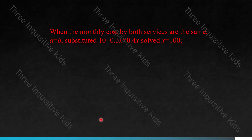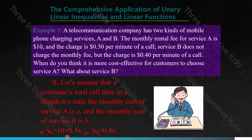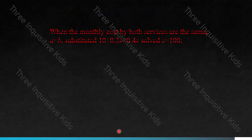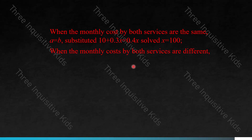When the monthly cost of both services is the same, A equals B. Substituting — since A is 10 plus 0.3x and B is 0.4x — we get the linear equation: 10 plus 0.3x equals 0.4x. Notice how we used linear functions and then, after substituting, transformed them into a linear equation. Solving this equation gives X equals 100: that is when the monthly cost of both services is the same.